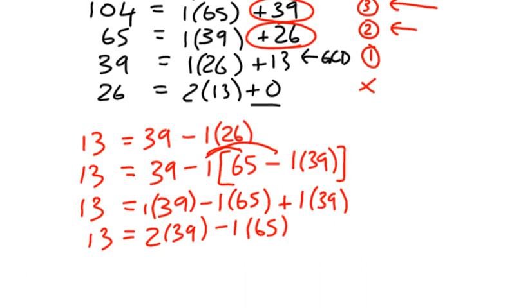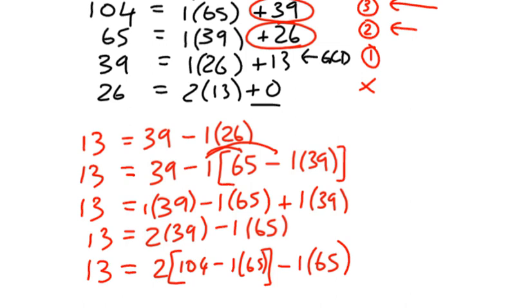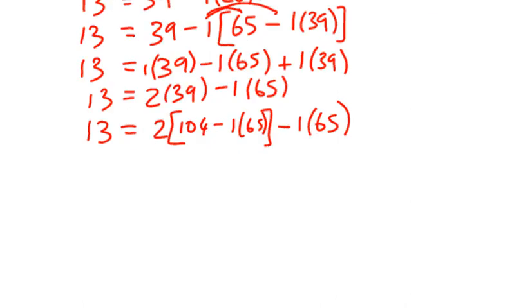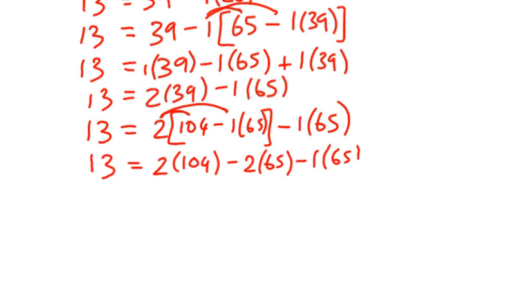So, where's 39 in the first of our numbers here? So, here we go. 39. What is 39? Well, according to the top there, it's 104 minus 1 lot of 65. And remember, of course, we've still got subtract 1 lot of 65 in the original equation. So, I've still got a little bit of tidying up to do from that. So, 13 is 2 lots of 104 minus 2 lots of 65. Subtract 1 lot of 65, which is 2 lots of 104. Subtract 3 lots of 65.